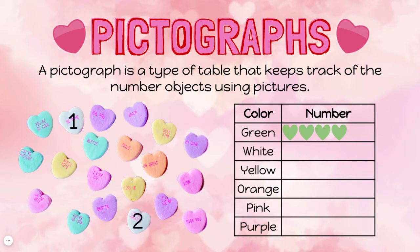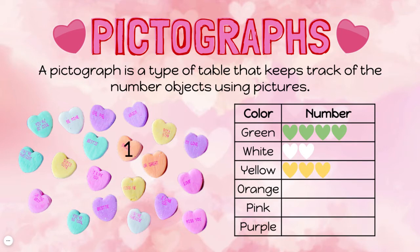One, two white candy hearts. We'll use white hearts on our pictograph — one, two. We have three yellow candy hearts, so one, two, three yellow hearts on the pictograph. We have two orange candy hearts.